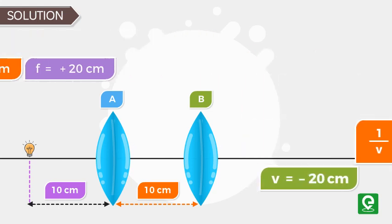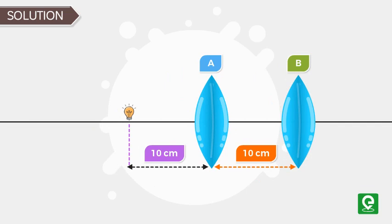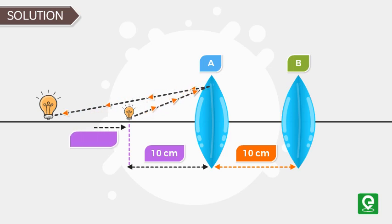This means that the light which is incident on the lens A from the object gets refracted in such a way that image is produced at a distance of 10 centimeters behind the object, which is also 20 centimeters away from the lens A.